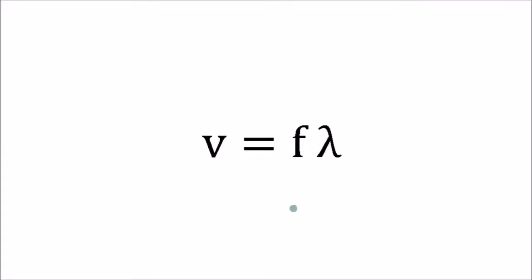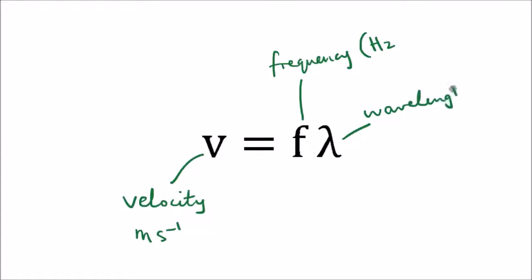We can also calculate the speed or velocity, the velocity in meters per second of a wave by using this equation, and we multiply the frequency, frequency in hertz by the wavelength, and the wavelength is in meters. Now, one hertz is just one wave per second. So, hertz is another way of saying per second.